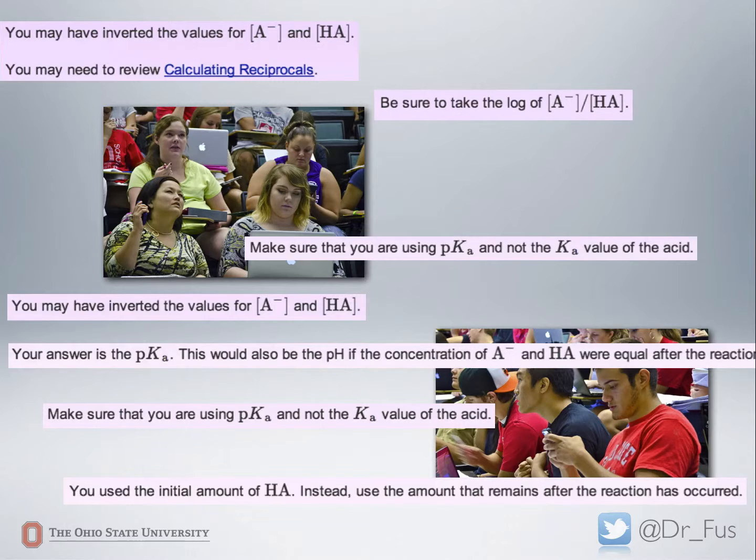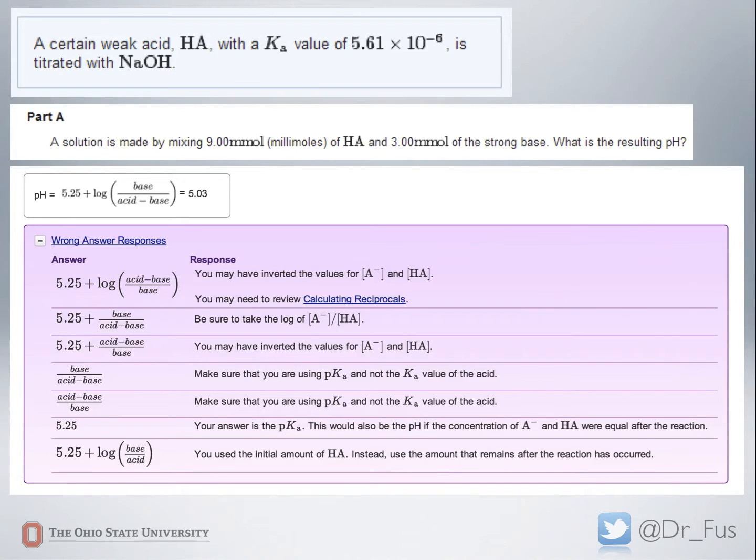So they could have had a math mistake. They could have switched the log and looked at the conjugate base versus the weak acid. They could calculate the pKa. But the question is, how do we give feedback right away to these students the way that they need it?